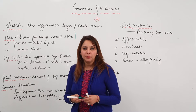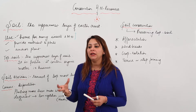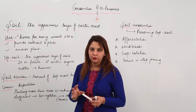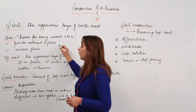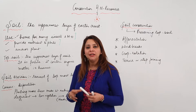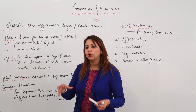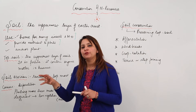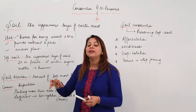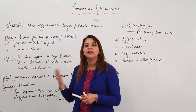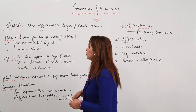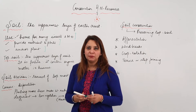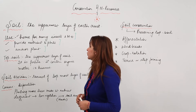Soil is the home for many microorganisms and insects — many organisms actually live in the soil, so it is their habitat. Soil also provides nutrients to plants, because plants need certain nutrients which are already present in soil. If plants get those nutrients, they can photosynthesize and grow, and then we get food. So directly or indirectly, we are dependent on soil. It also anchors plants — it holds them in place.